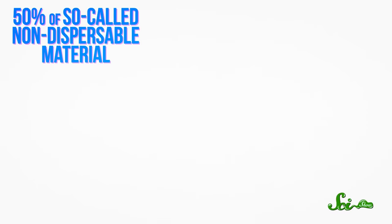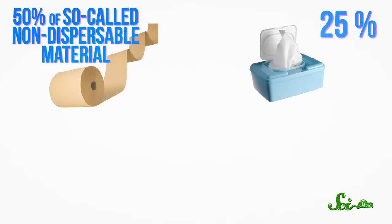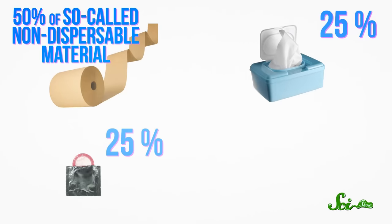According to one estimate, as much as 50% of the so-called non-dispersable material in wastewater is paper towels from public restrooms. Another 25% is nothing but baby wipes, and the remaining 25% is a mixture of condoms and cosmetic wipes and tampon applicators and random things that toddlers probably got their hands on. The process for removing them varies depending on the system, but usually involves another mechanical screen or skimmer.